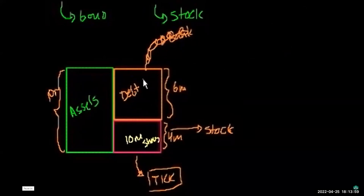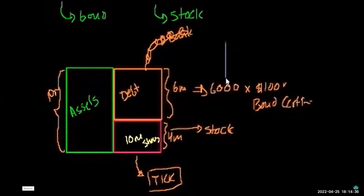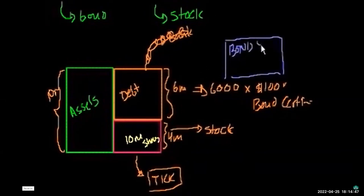Bonds are essentially borrowing from the public markets — from a large number of people. For example, $6 million in debt could be divided into 6,000 bond certificates, each worth $1,000. So you could have 6,000 times $1,000 bond certificates — let's visualize what a bond certificate looks like.